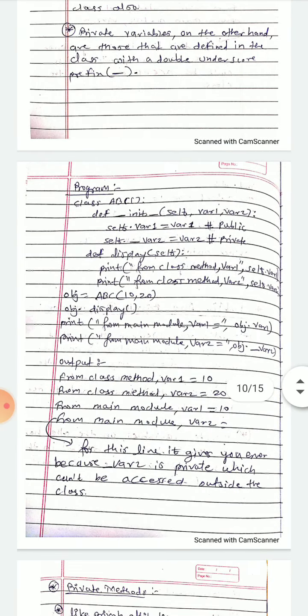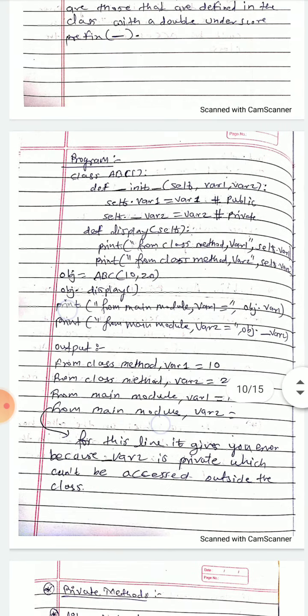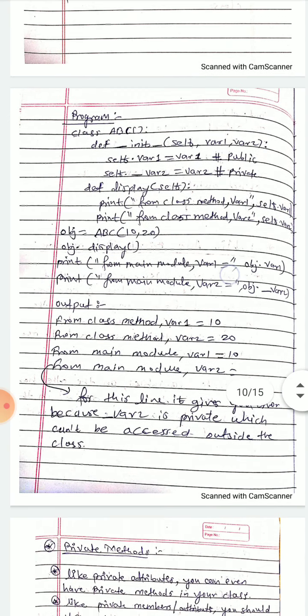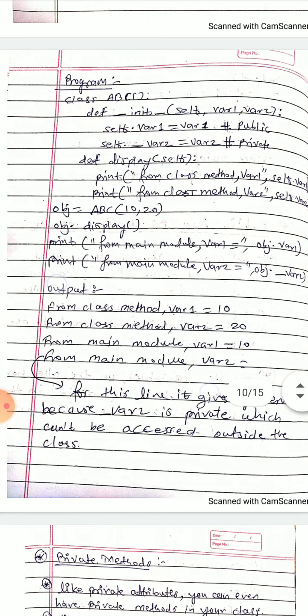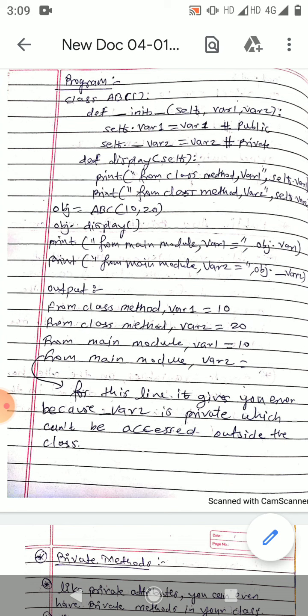Now see the output. From class method, var1 is equal to 10 and var2 is equal to 20. From the main module, var1 is 10. We are getting the output of var1 as 10 because var1 is a public member and can be accessed outside the class.